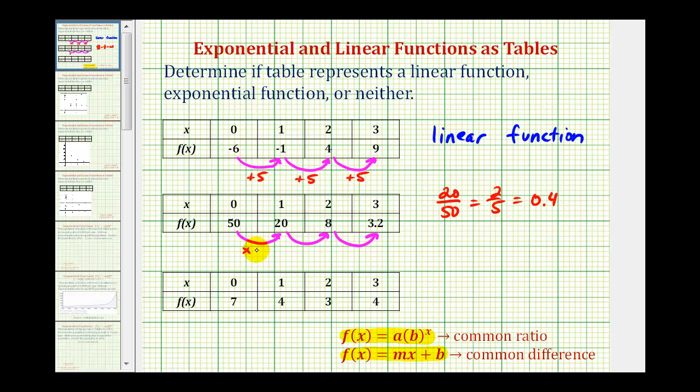Well, 50 × 0.4 is equal to 20, and 20 × 0.4 is equal to 8, and 8 × 0.4 is equal to 3.2, therefore, these function values have the common ratio of 0.4 or 2/5, and therefore, this table represents an exponential function.